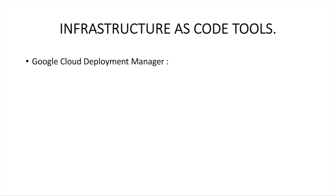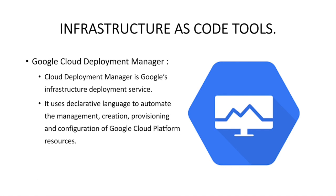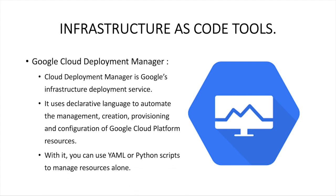The next tool is Google Cloud Deployment Manager, which is a service for GCP. It is Google's infrastructure automation service and uses a declarative language to automate the management, creation, provisioning, and configuration of resources on the GCP platform. You can write the code in YAML or use Python to manage resources on GCP.